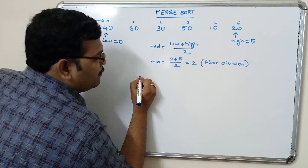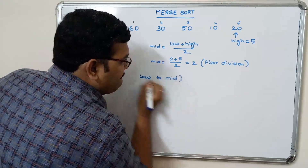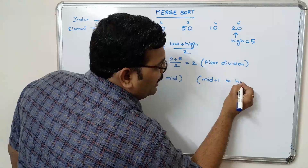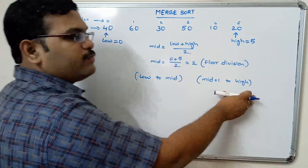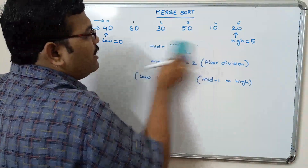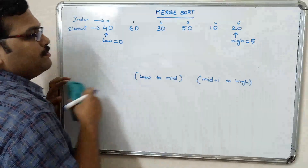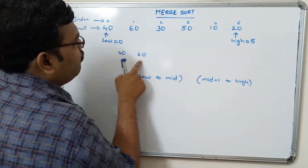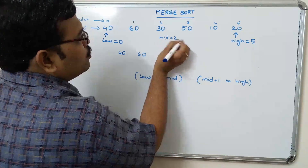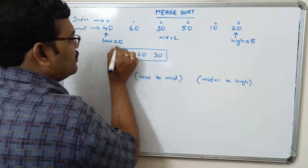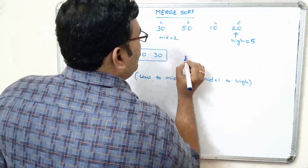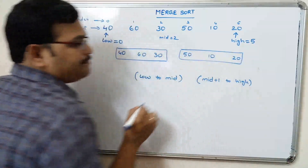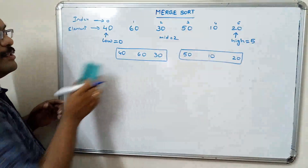Now divide the complete elements from low to mid, and mid plus one to high. So we split into two parts: the first part is 40, 60, 30 (index 0 to mid which is 2), and the second part is 50 and 20 (mid plus one to high).